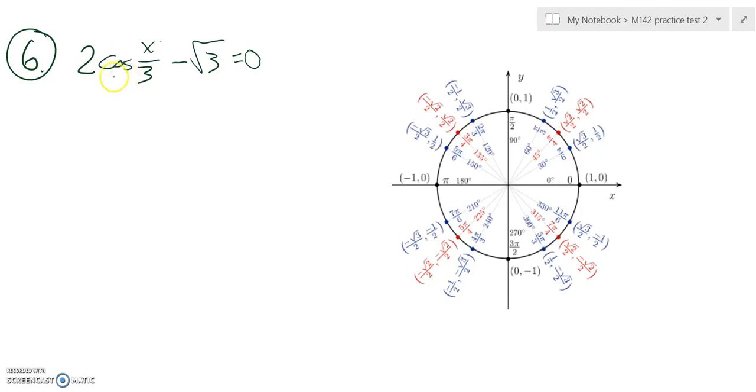I'm going to get the cosine all alone, and then I'll see what I can figure out using the unit circle. So I'm going to add root 3 to both sides, and if I do that, I end up with this.